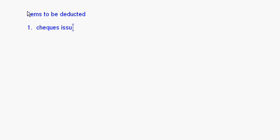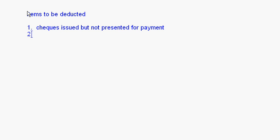The first item to be deducted is: checks issued but not presented for payment. When checks are issued, the overdraft balance as per the cash book increases. But since the checks have not been presented for payment, the bank's overdraft balance is less. So this should be deducted.